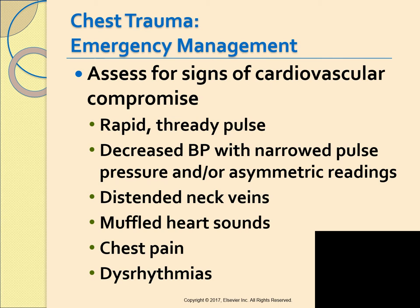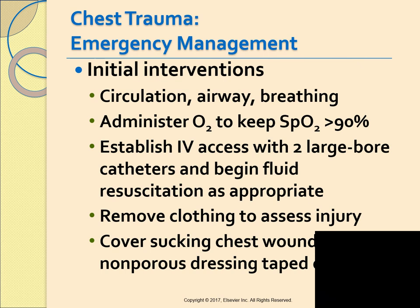Signs of cardiovascular compromise include rapid thready pulse, decreased blood pressure, narrowed pulse pressure, asymmetrical blood pressure values in the arms — values that are very obviously different on each side — distended neck veins, muffled heart sounds, chest pain, and dysrhythmias.